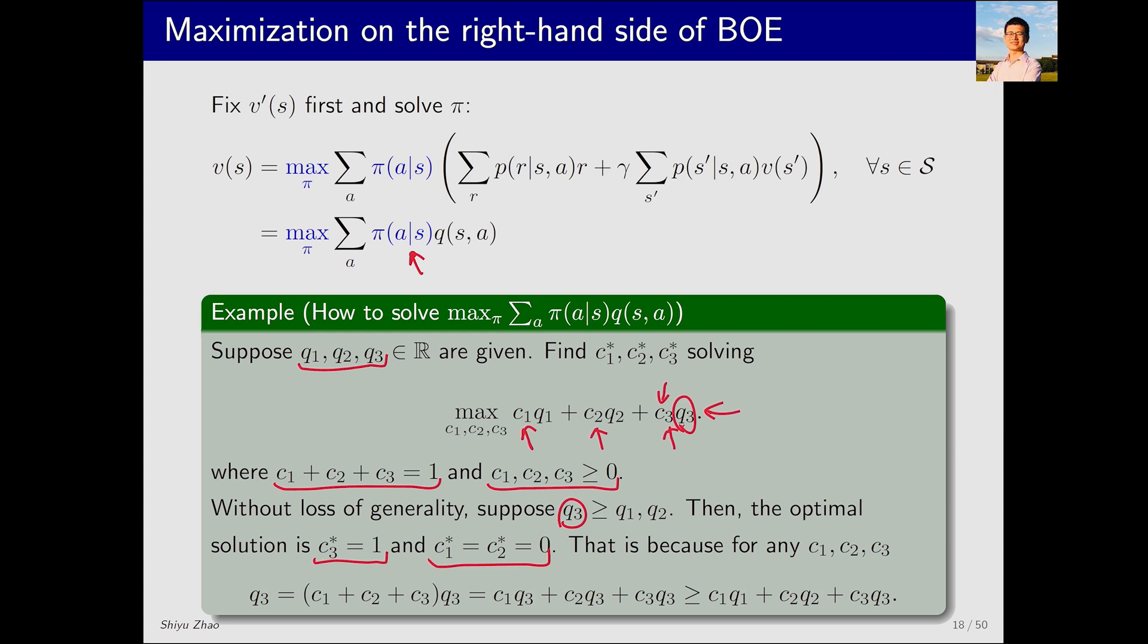From a mathematical point of view, this can also be easily explained. Let's look at this equation. First on the left is Q3. Then Q3 equals (C1 + C2 + C3) times Q3. Since these added together equal 1, and when we expand it we can get C1Q3, C2Q3, C3Q3. Because Q3 is the largest, it is greater than the others. Therefore it must be greater than or equal to C1Q1 + C2Q2 + C3Q3.